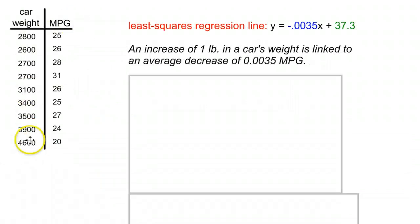If you have this original set of data we had with the weight of a car and the miles per gallon, you have your regression line up here. And we said in a sentence that an increase of one pound, talking about our slope now, increase of one pound in a car's weight is linked to an average decrease of 0.0035 miles per gallon. And that's what the slope is referring to, increase by one, decrease by that.